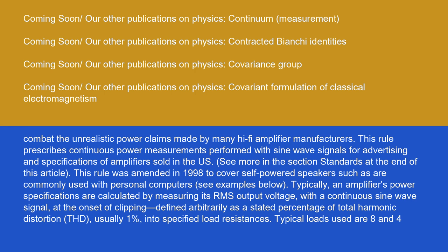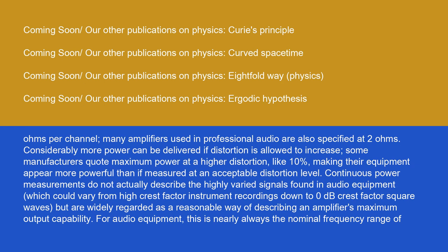Typically, an amplifier's power specifications are calculated by measuring its RMS output voltage with a continuous sine wave signal at the onset of clipping, defined arbitrarily as a stated percentage of total harmonic distortion (THD), usually 1%, in a specified load resistance. Typical loads used are 8 and 4 ohms per channel. Many amplifiers used in professional audio are also specified at 2 ohms. Considerably more power can be delivered if distortion is allowed to increase. Some manufacturers quote maximum power at a higher distortion, like 10%.